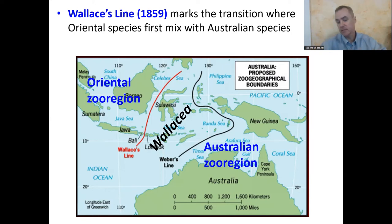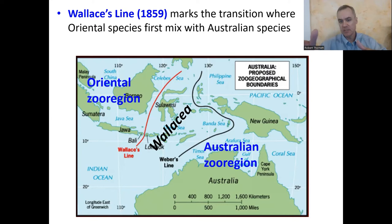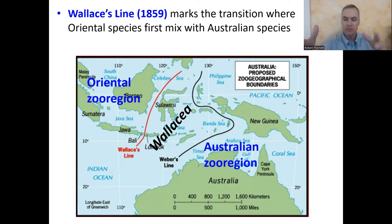Later, a German named Weber came up with a black line marking where the Oriental species fizzle out entirely, leaving only Australian species. So these researchers were putting lines on maps to delineate where a certain group of animals can be found, where they mix with another group, and where the second group takes over. That's all an example of zoogeography.